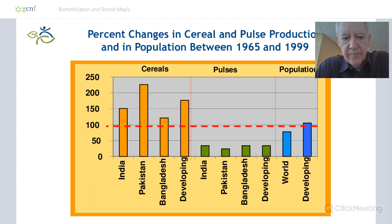These high-yielding varieties were widely adopted, especially in South Asia. That's represented by the orange bars in the diagram. Production increased rapidly and more than doubled during that period.